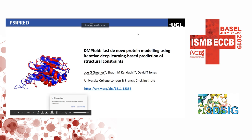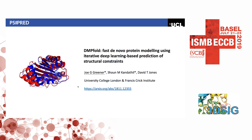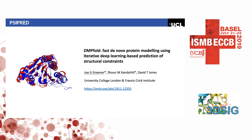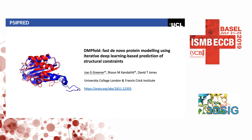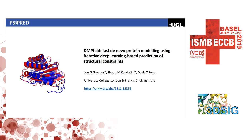Just a little plug for the CASP special issue that's coming up — David's group has put together a nice review of these methods for those who aren't experts and want to know the nuts and bolts; that'll be a good paper to look at. Hello everyone, I'm going to talk about our method called DMPfold. This work was done at University College London, although the group is currently based at the Francis Crick Institute. I'm Joe Greener, a postdoc. This work was also done by Sean Candethil and David Jones. The preprint is currently on archive, so feel free to read that.